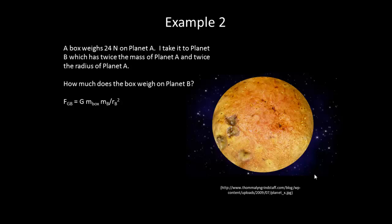Well, the force of gravity on B is going to be equal to big G times the mass of the box times the mass of planet B over the radius of planet B squared. We can replace the mass of B with 2 times the mass of A and replace the radius of B with 2 times the radius of A. Now, if I pull out these factors, I end up getting 2 divided by 2 squared times what is the force of gravity on A.